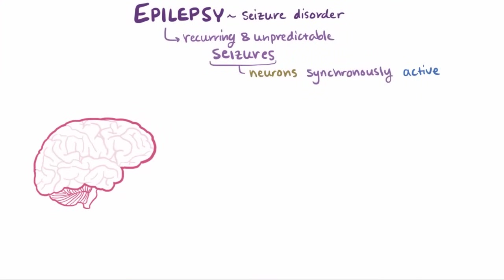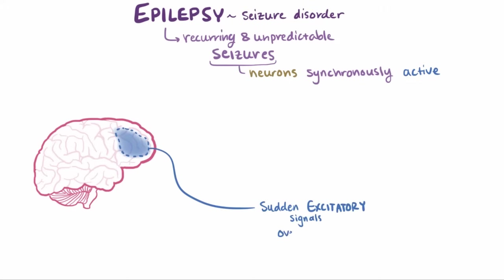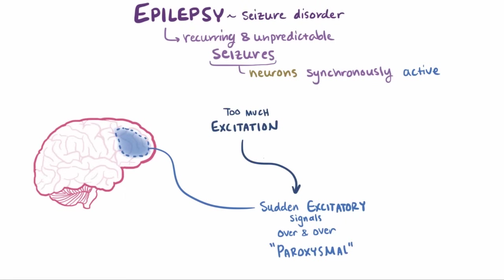During a seizure, clusters of neurons in the brain become temporarily impaired and start sending out a ton of excitatory signals over and over again, and these are sometimes said to be paroxysmal. These paroxysmal electrical discharges are thought to happen due to either too much excitation or too little inhibition, which are kind of two sides of the same coin.